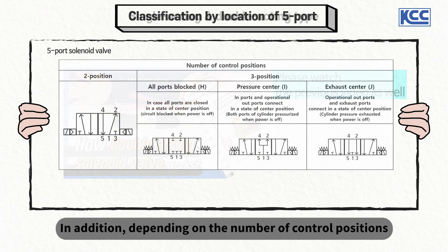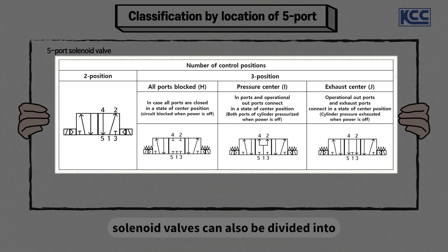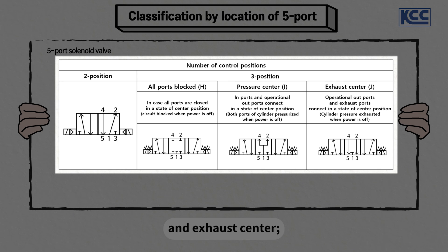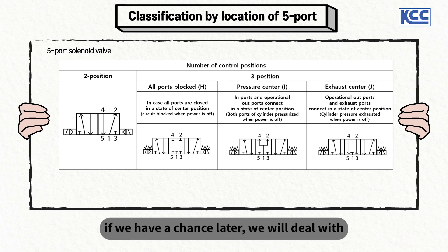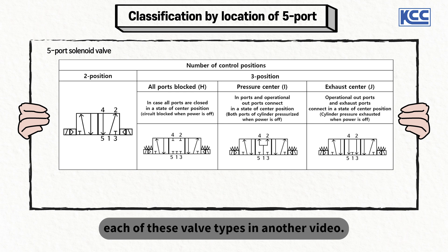In addition, depending on the number of control positions and connection methods, solenoid valves can also be divided into two position valves, three position valves, all port blocked, pressure center, and exhaust center. If we have a chance later, we will deal with the detailed characteristics of each of these valve types in another video.